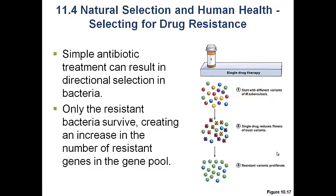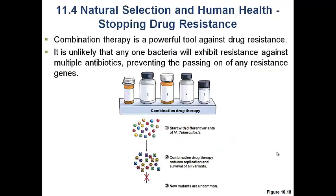We see more and more bacteria that are resistant to antibiotics. One thing that can be done to prevent this is combination drug therapy — the more antibiotics you use, the more likely it is that none of the bacteria will be resistant to all of those drugs. By treating with several different antibiotics, you can wipe out all the bacteria, leaving none that are resistant. We as humans will have to continue coming up with new antibiotics, because by the very nature of using antibiotics, bacteria develop resistance, and the more they're used the more resistance develops.